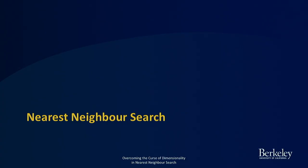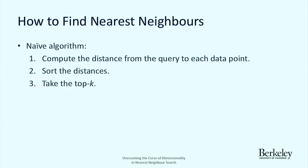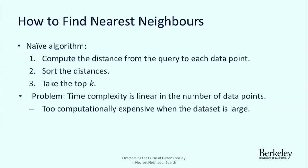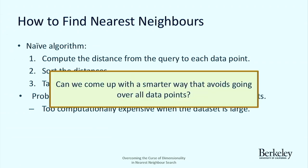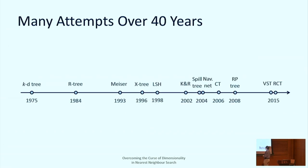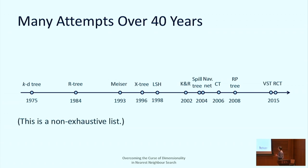Moving on to how to overcome the curse of dimensionality in nearest neighbor search. Nearest neighbor search is very important in machine learning with many applications, including in the previous method. A naive algorithm iterates over all data points, sorts distances, and takes the top K — but the complexity is linear in the number of data points, which is too expensive for large datasets. Here is a brief history of attempts over the past 40 years, starting with the KD-tree in 1975. This non-exhaustive list shows only methods with theoretical guarantees.